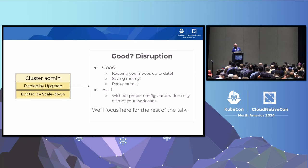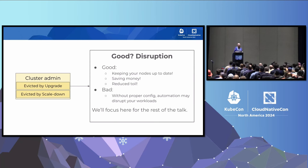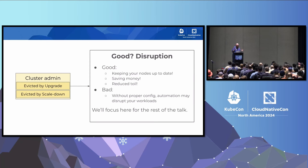Now, moving into the middle of this taxonomy: cluster administrative actions, specifically node drains. Most of these are actually driven by automation these days — cluster autoscaler, upgrades, and node repair. I'm going to focus here for the rest of the talk, because this was a surprising area where there was a lot of divergence between providers and implementations.